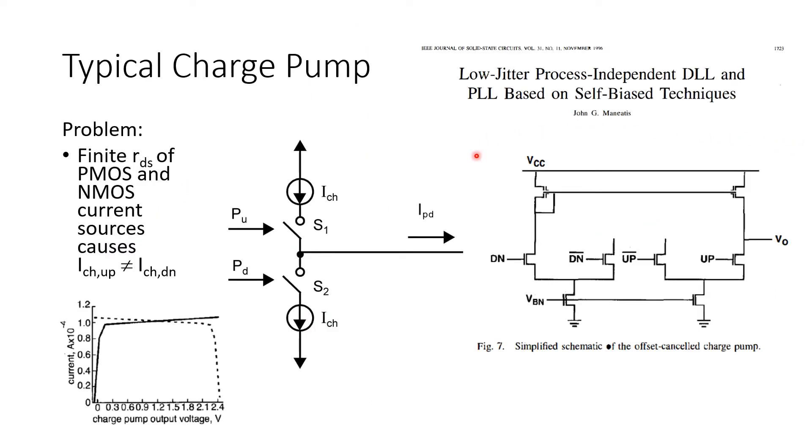Here's a very simple implementation of a CMOS charge pump circuit developed in the mid-90s. Some nice things about this circuit are that it presents a similar load to both the pull-up and pull-down inputs. The assumption here is that we have complementary versions of these inputs available and they're both applied to differential pairs.